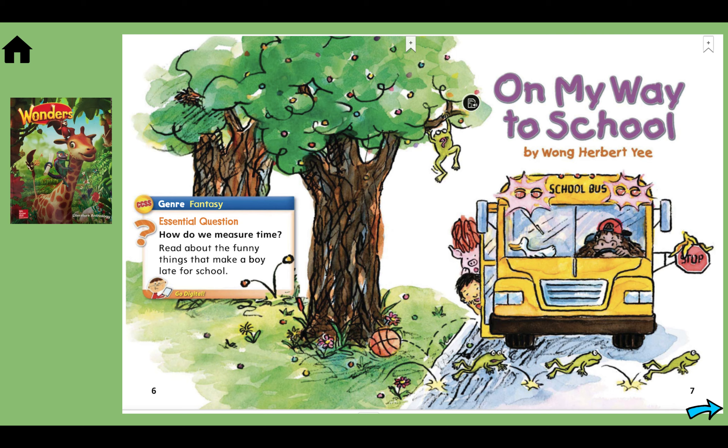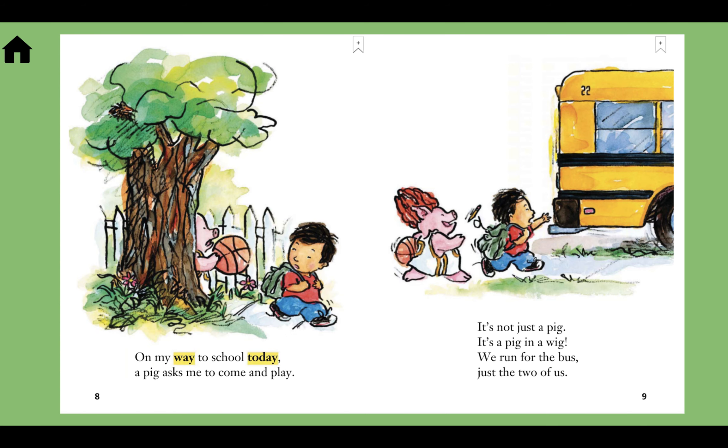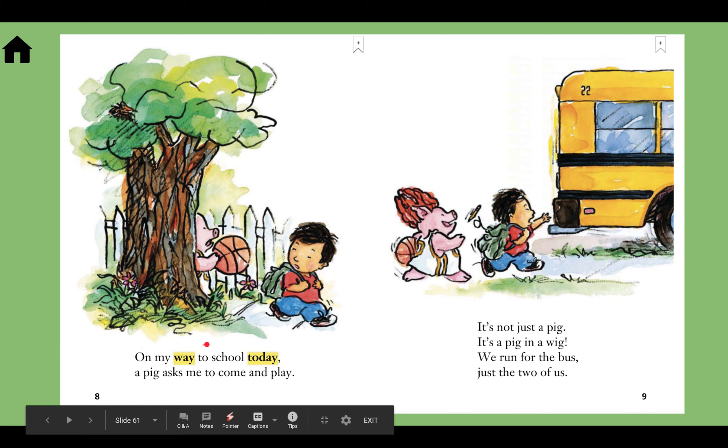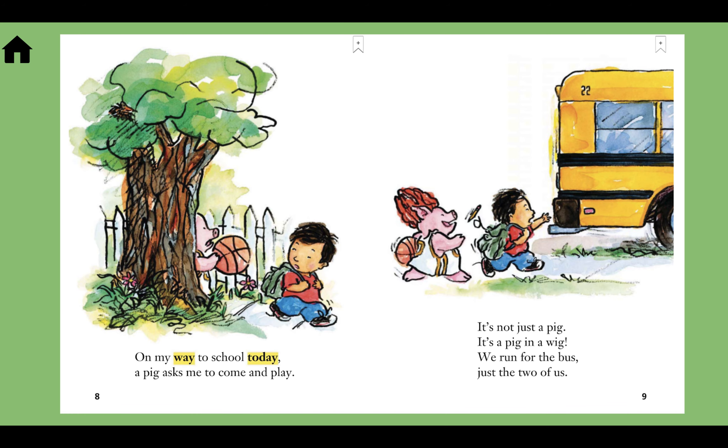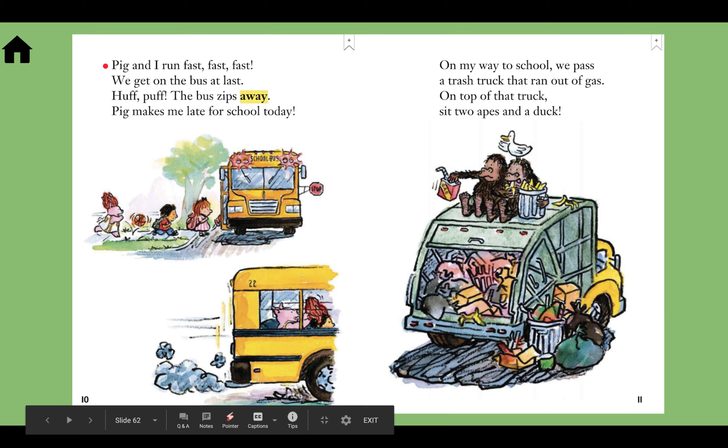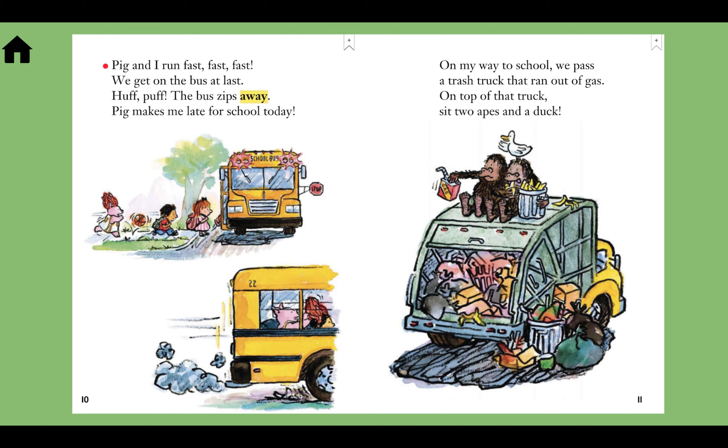Take out your literature anthology and turn to page six. Follow along as I read the story On My Way to School. Listen very carefully because you have an assignment in Seesaw with this story. So please pay attention. On my way to school today, a pig asks me to come and play. It's not just a pig. It's a pig in a wig. We run for the bus, just the two of us. Oh friends, it's a rhyming story. Pig and I run fast, fast, fast. We get on the bus at last.